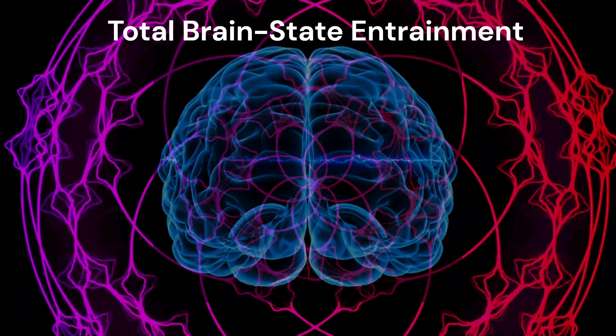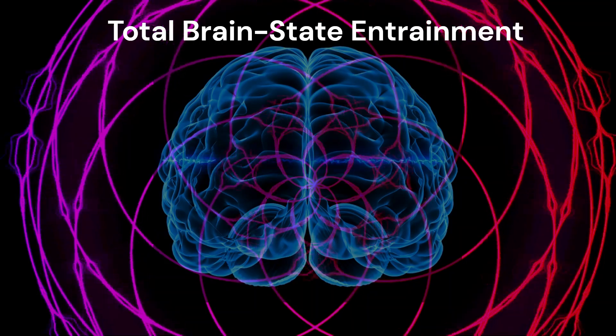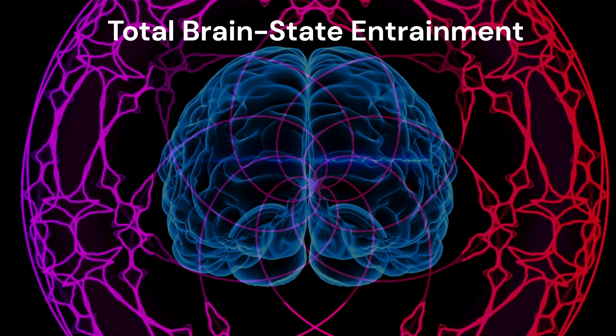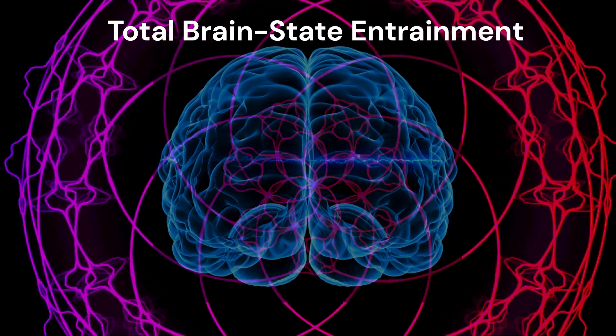Specifically, total brain state entrainment is an additional process that not only entrains each specific sensory input, but connects the left and right hemisphere of the brain in a more coherent state.